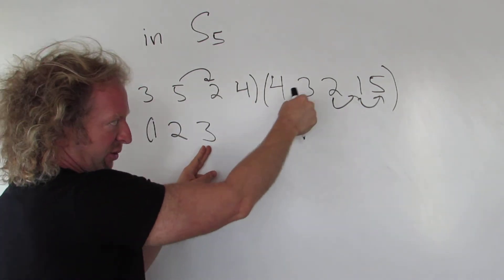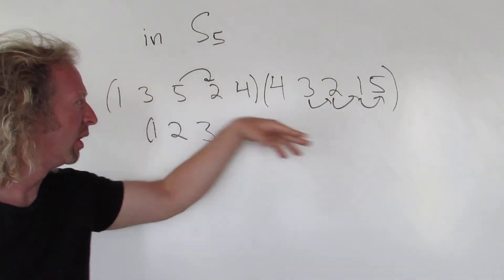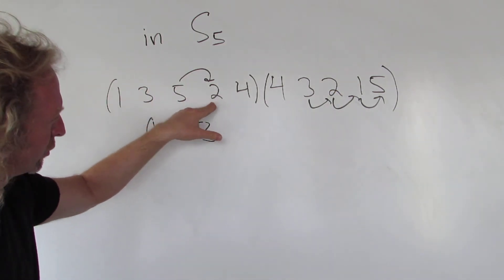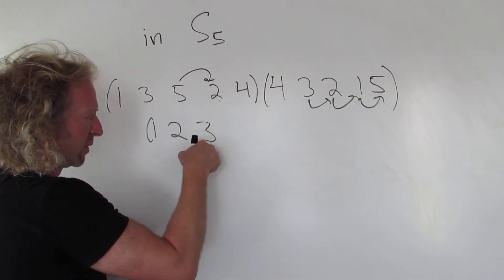3 goes to 2. Right to left. 3 goes to 2. Then you look for the 2 over here. So 2 goes to 4. So 3 goes to 4.